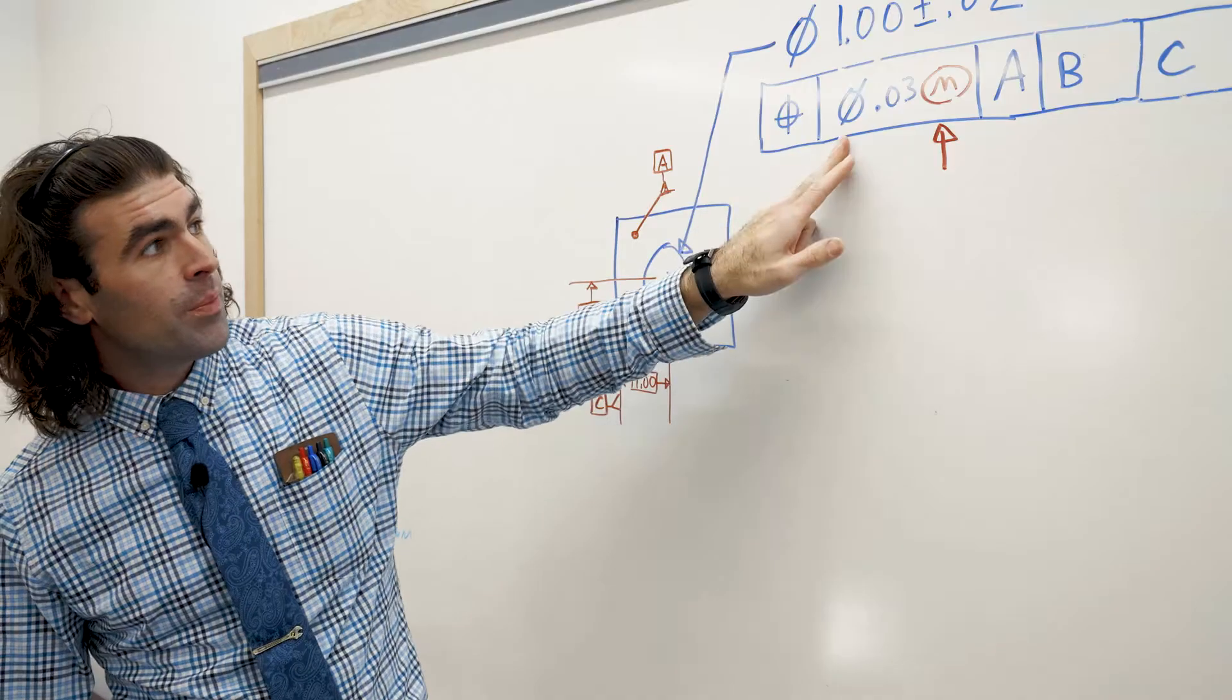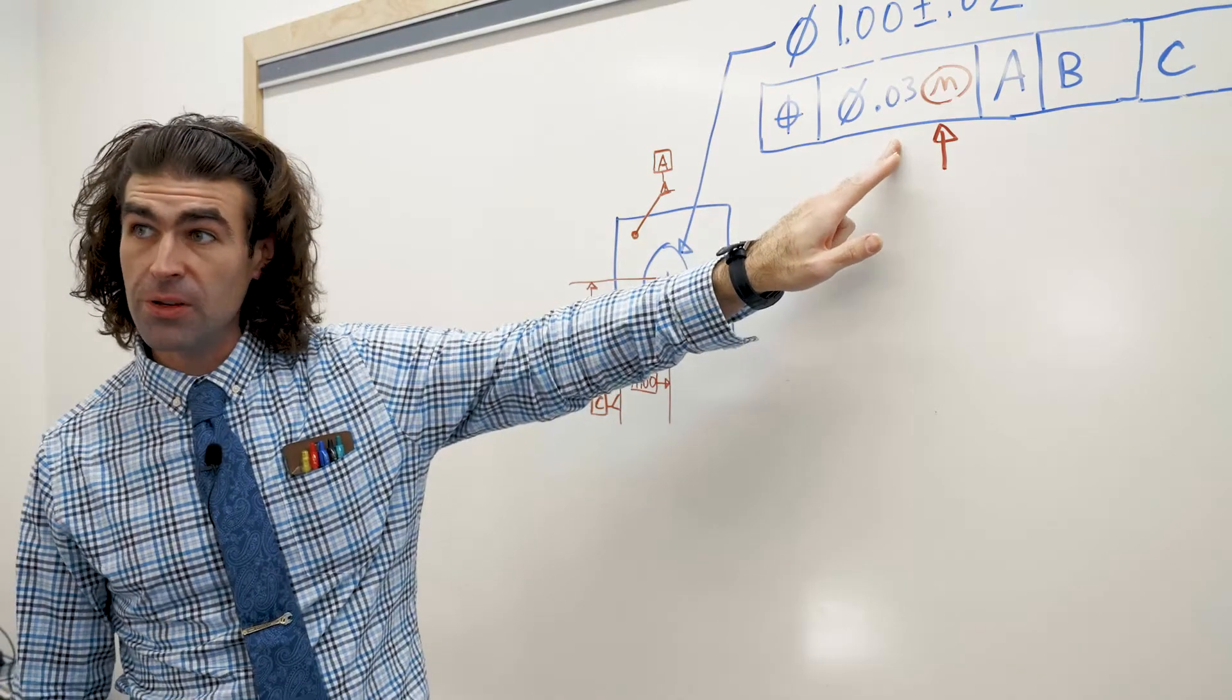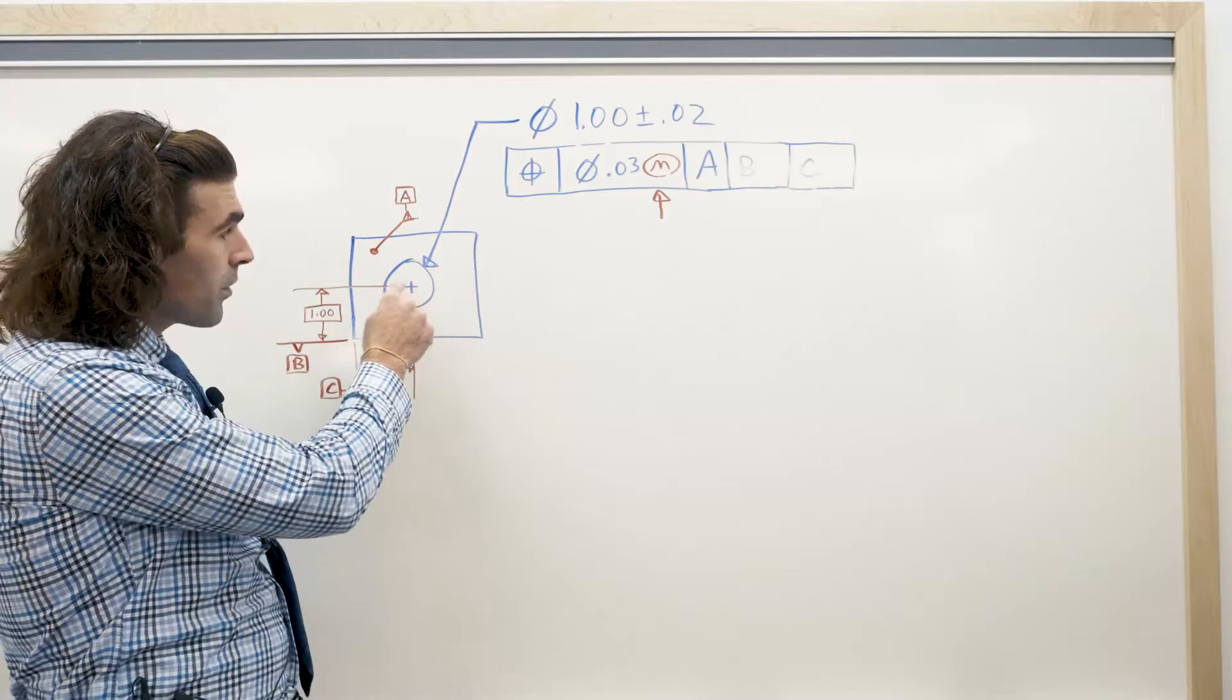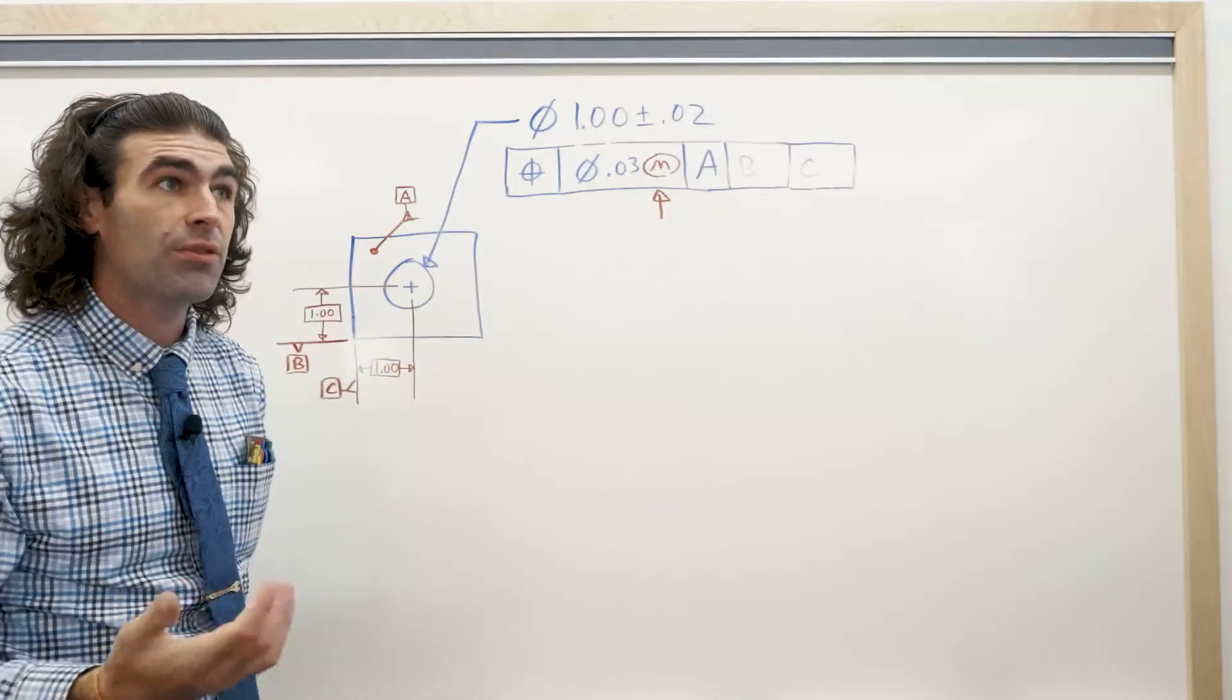So this little symbol means position, diameter tolerance zone, 30 thousandths of position. So you can imagine a circle here, 30 thousandths, where the axis of that feature needs to be.